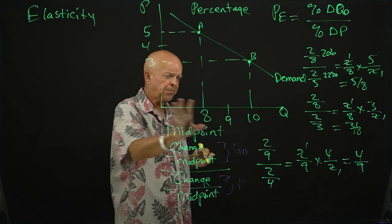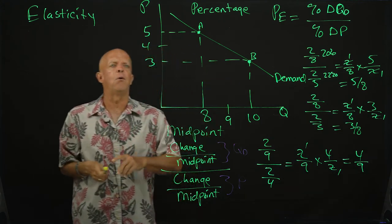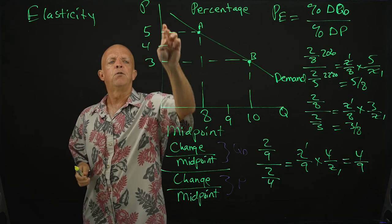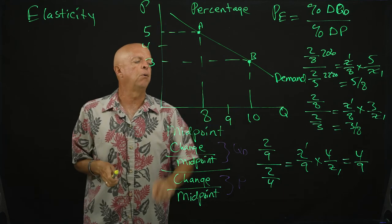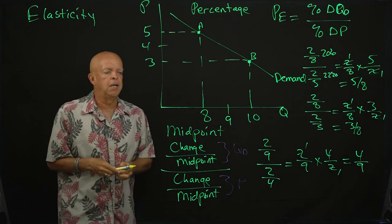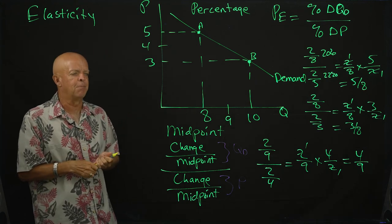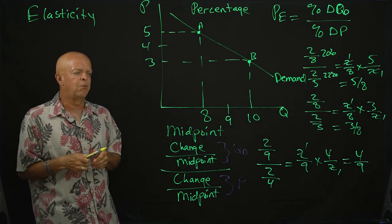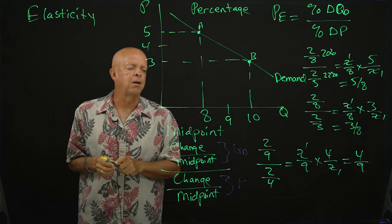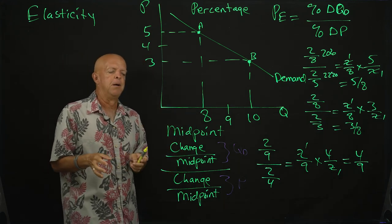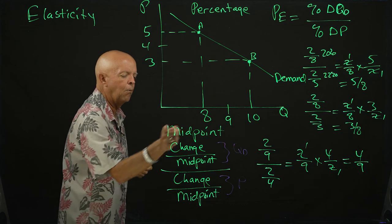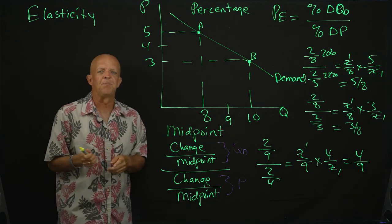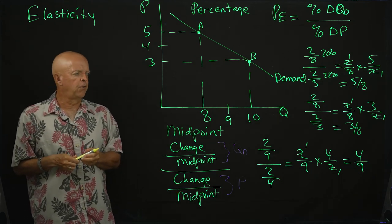And so generally when you're given problems to calculate, if you know all four numbers - first and second price and the first and second quantity - you will undoubtedly have to calculate the midpoint method. And whenever I give test questions, I will say calculate the elasticity using the midpoint method, so definitely know this formula right here.